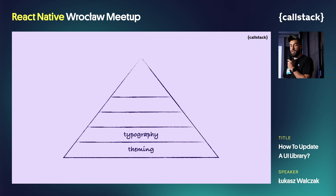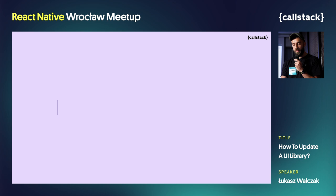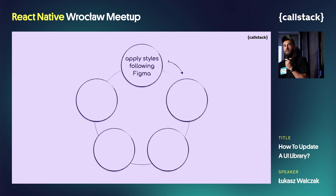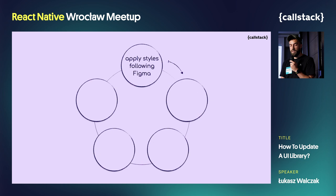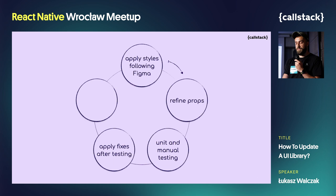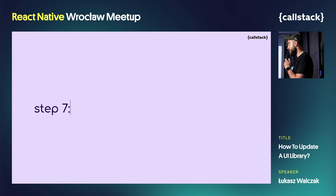Once theming and typography were done, we focused on crucial components that are often the basis for other components — surface and touchable. From that step, we were refactoring all the components one after another by applying styles following the Figma kit. I consider myself a pixel-oriented developer, so I made sure several times that everything was in its place. Once styles are applied and props are refined, it's time to cover new things with unit tests and manual testing on a real device. If manual testing presents issues, we applied fixes and finally were able to open the PR.